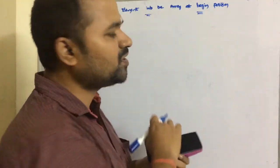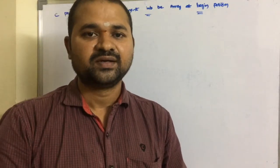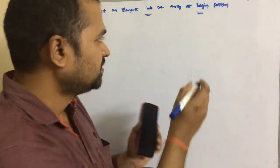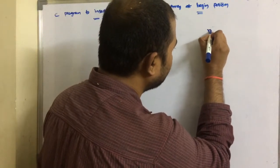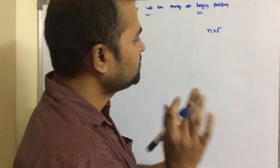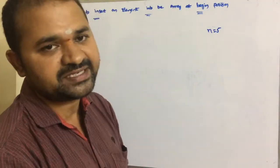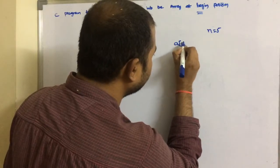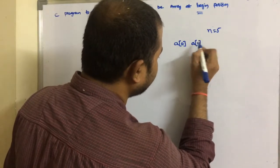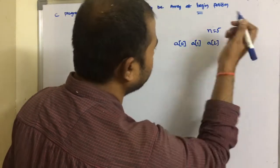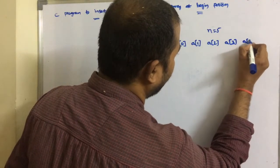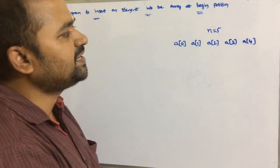The input variables in this program are: size of the array n, array elements, and the element which we are inserting. Let n equal 5, meaning we can store 5 elements. The index of an array starts from 0 and continues up to n minus 1, that is 4. So the elements are a[0], a[1], a[2], a[3], and a[4].